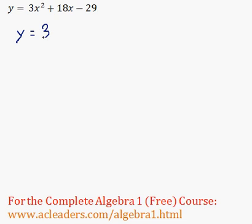So what I'll do is that I'll factor out the 3. And 3x squared divided by 3 is just x squared. 18x divided by 3 is 6x. And remember that the last term we just leave it outside.